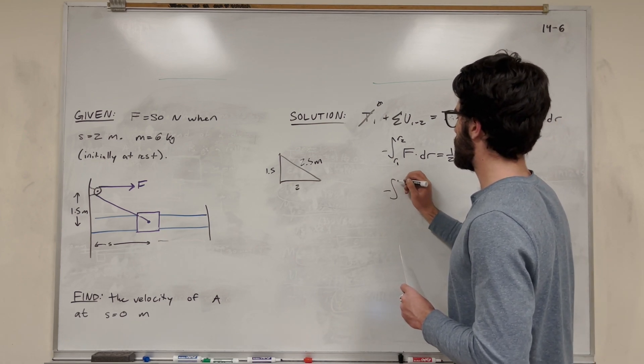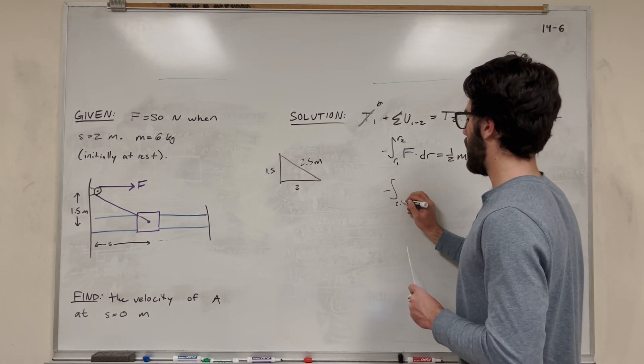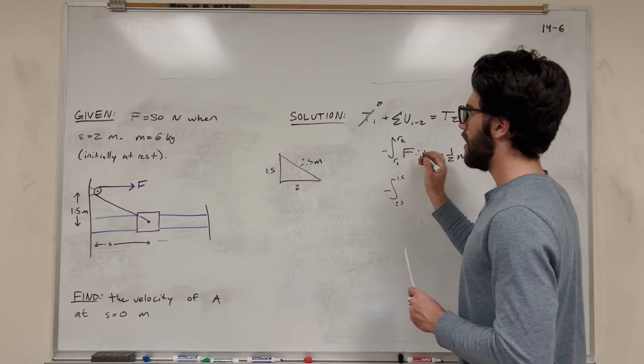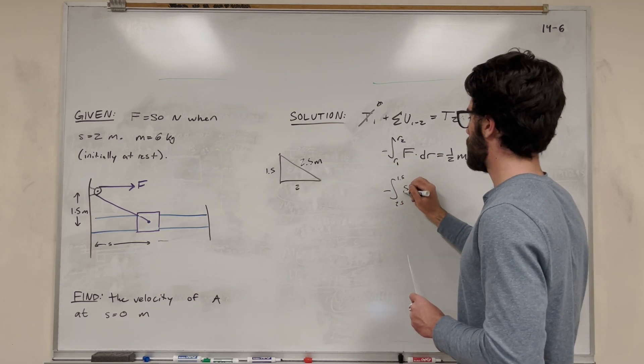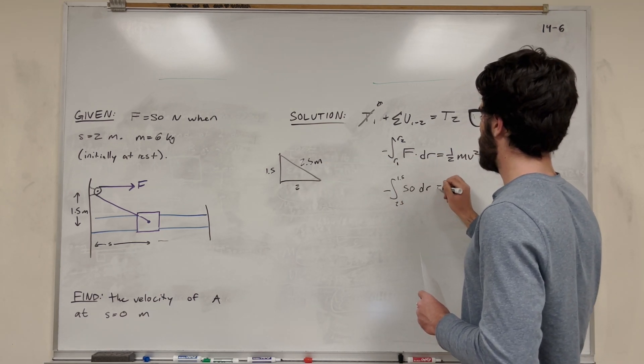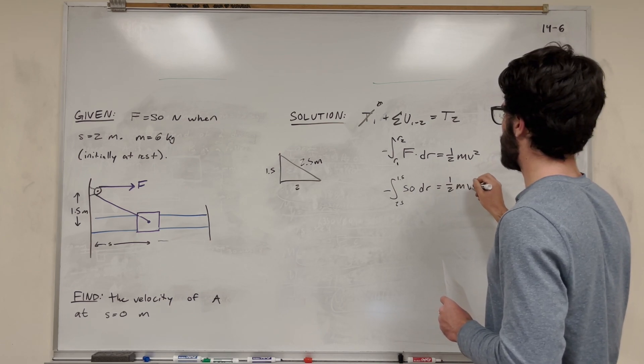So what this is going to look like is integral from 2.5 to 1.5. Now, of course, we can plug in 50 newtons, and it's equal to one half mass velocity squared.